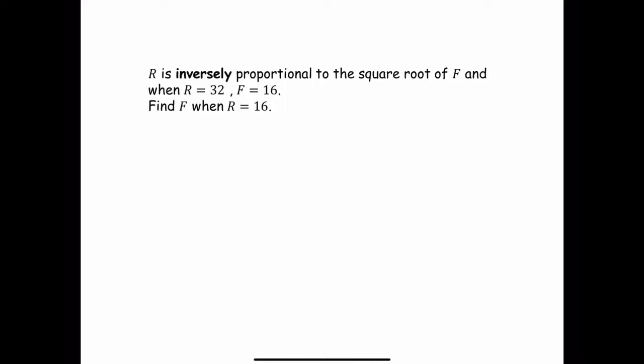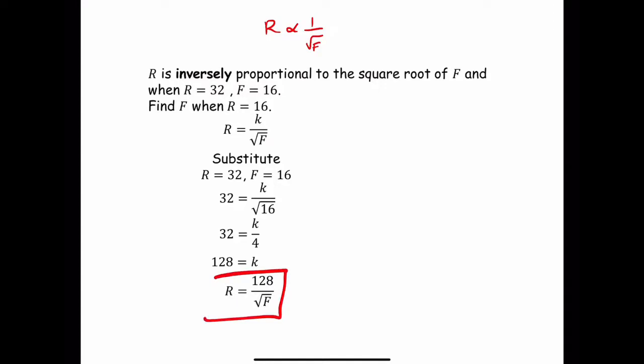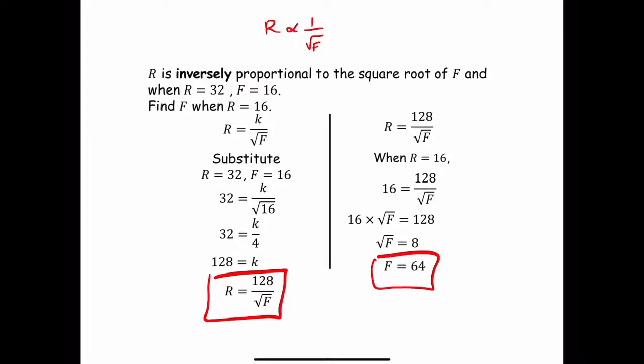You should have r is inversely proportional to the square root of f. Therefore, the first line we need to write: r equals k over the square root of f. Substitute, rearrange. Remember square root of 16 is just simply 4. So k is 128. You need a relationship. Please, please, please make sure you always write it down. And then simply substitution to work out the other value, which would be 64. You don't have to square root f, you have to ask for f.